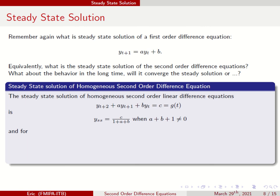If g(t) is just a constant, then you will have a steady state solution when 1 + A + B is not equal to zero. If 1 + A + B equals zero, then you do not have a steady state solution.